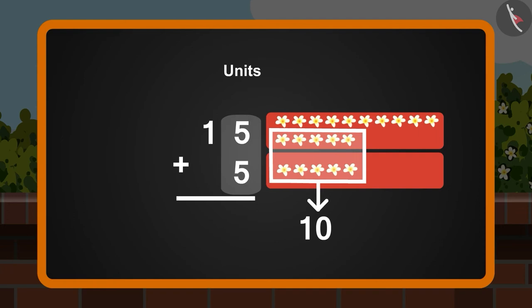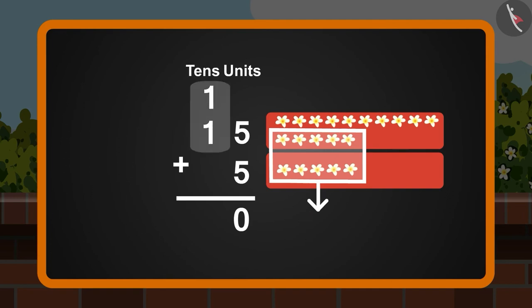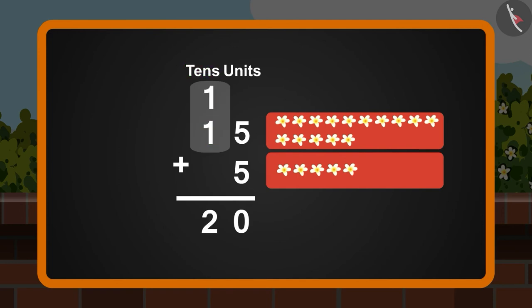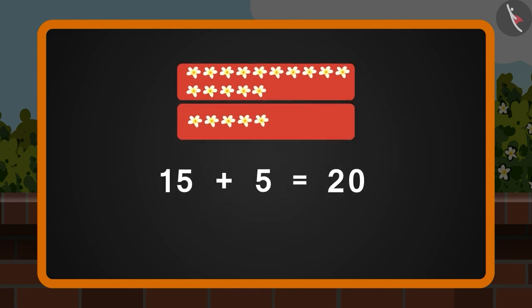Children, you remember how to write 10 in units? Right! First we will write 0 under the unit section like this. Now we will take the 1 as a carry over under the tenth section. Then we will add the numbers in the tenth section. 1 plus 1 from the carry over is equals to 2. Just like this, 15 plus 5 is equals to 20.